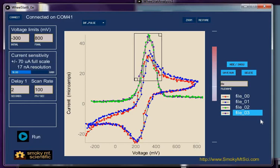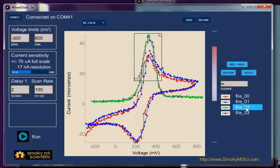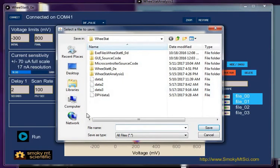What we want to do now is to select our two differential pulse voltammetry experiments and save those. We're going to call it data one. We're going to save that in a place where we know where it is. We're then going to deselect those two and select our two cyclic voltammograms and save them. Let's call those cyclic voltammetry data one.